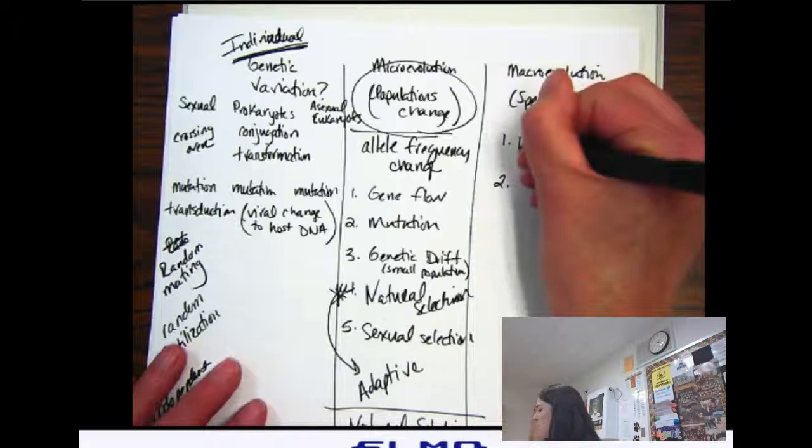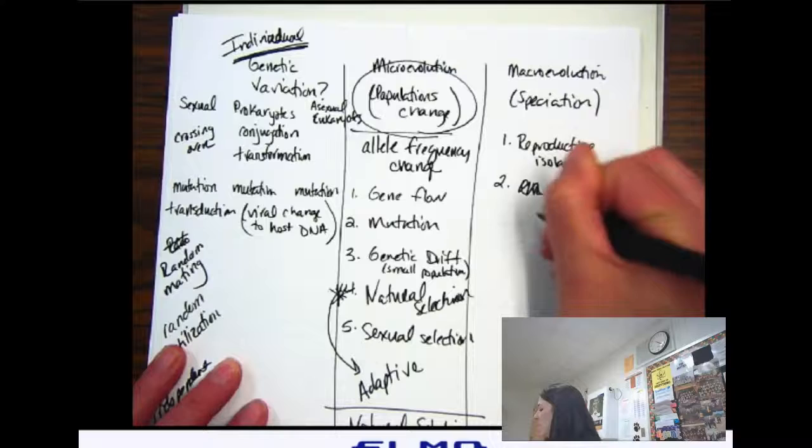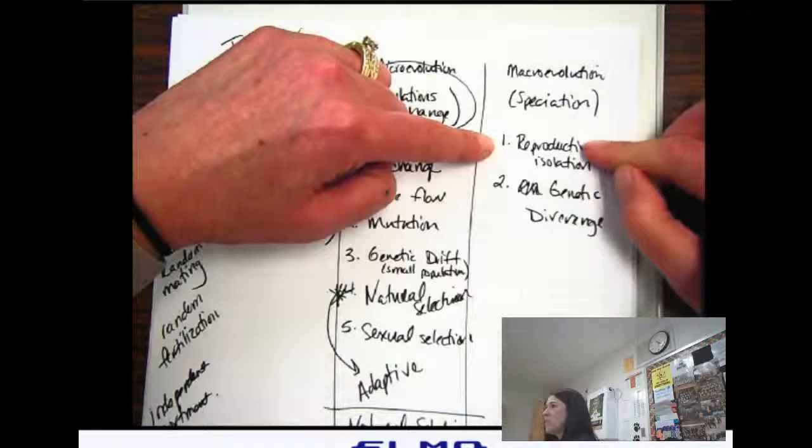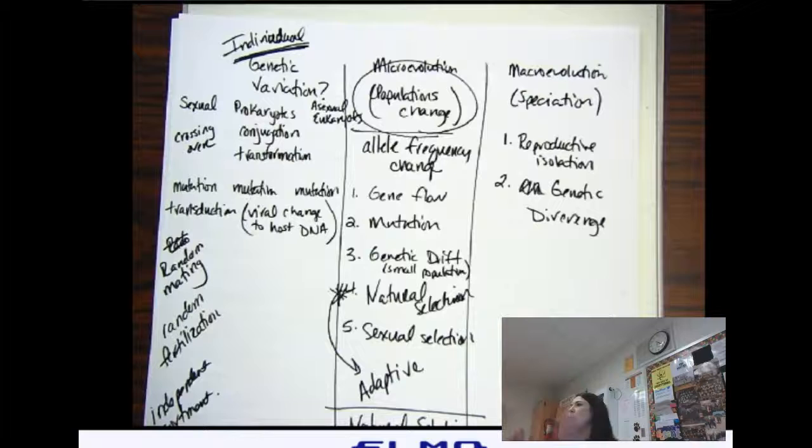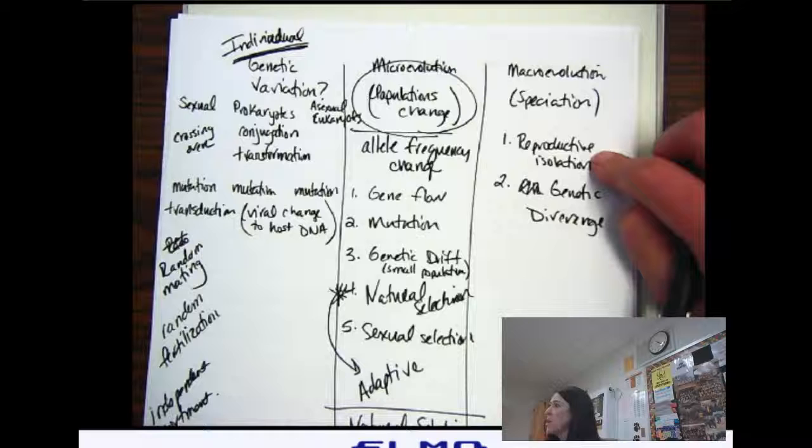So there's two things that have to happen to get a brand new species. Reproductive isolation and genetic change or genetic divergence. If we have to have reproductive isolation first, because genes in a population change all the time. That just means the whole population changes. I need to reproductively isolate one part of the population from the other so that when genes change, they change differently for the different subgroups.